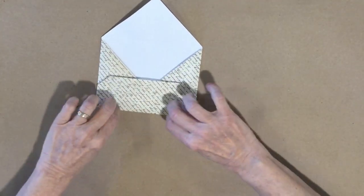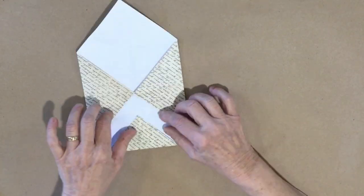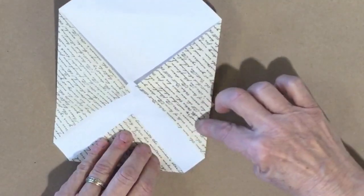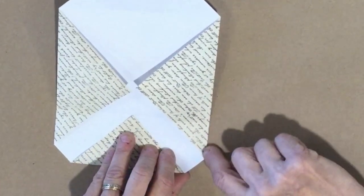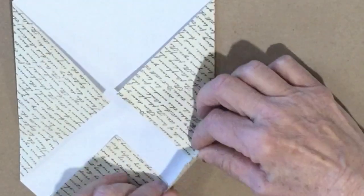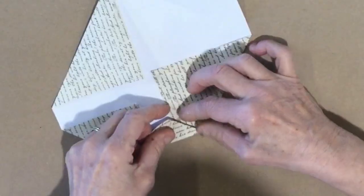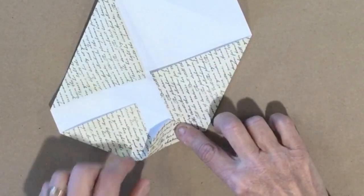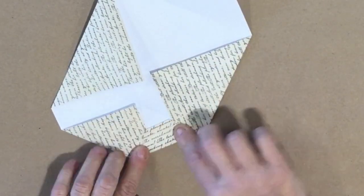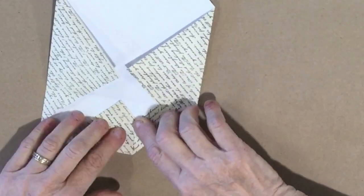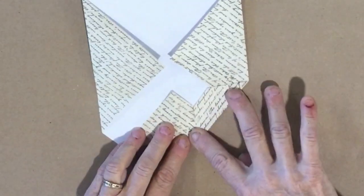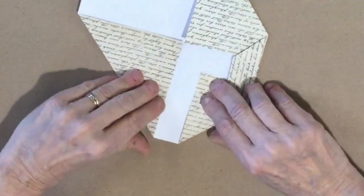Now these two corners we are bringing up. There is a straight line going right here. I want this edge to be right on this straight line. Like that. And then coming down, I will have a straight line going up here. So this is right on the crease line and this is going right up into the center. We are doing the same thing with the other side.